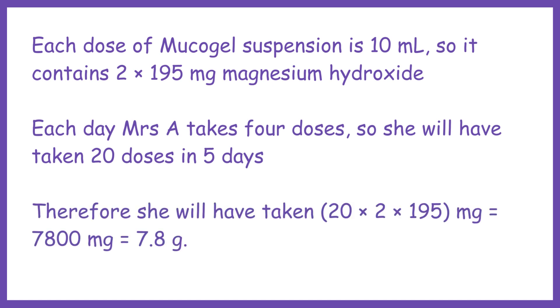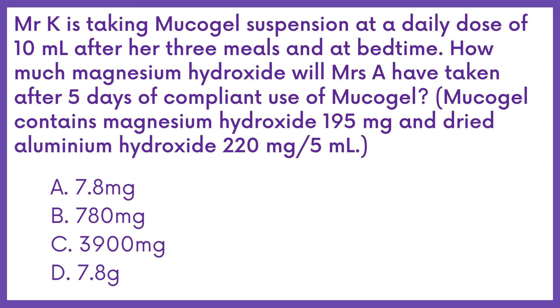Therefore, she will have taken 20 × 2 × 195 mg = 7,800 mg = 7.8 g. Therefore, the answer is Option D.